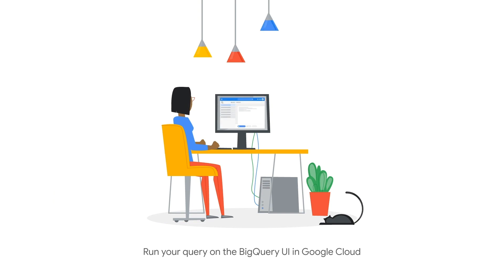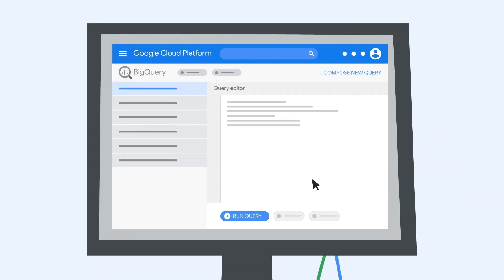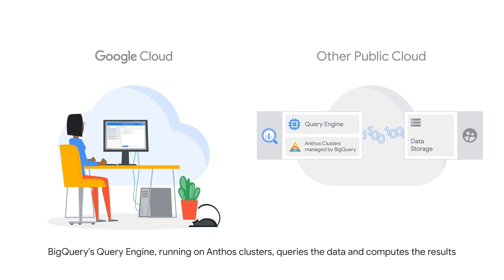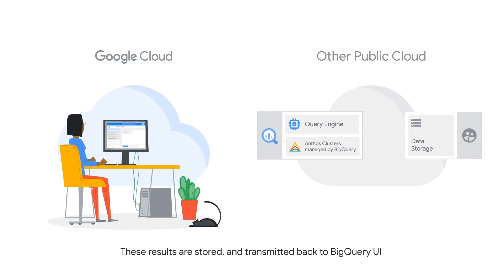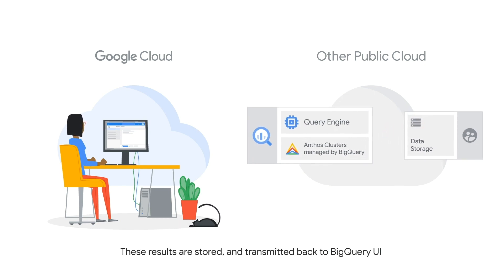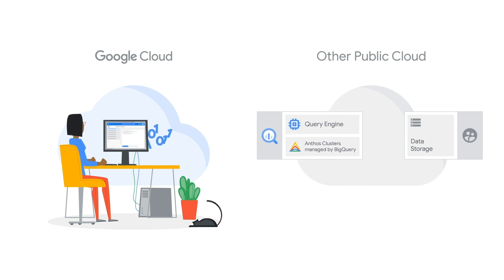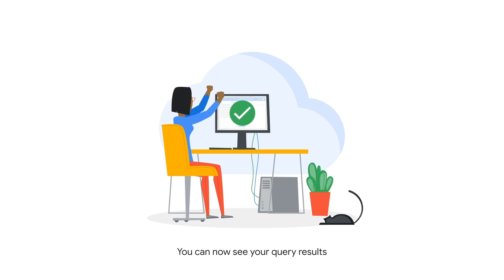Behind the scenes, BigQuery's query engine is running on our Anthos clusters within the BigQuery-managed service. We get the data from your data storage only once you've authorized permissions via your other public cloud's IAM roles. Those roles are tied to a BigQuery Omni connection object. You can change, grant, or revoke access at any time, and the connection object can be shared to multiple users within that same project. We maintain a secure connection to bring your query results back to Google Cloud.